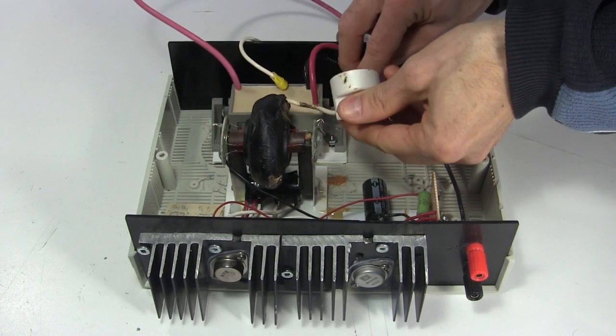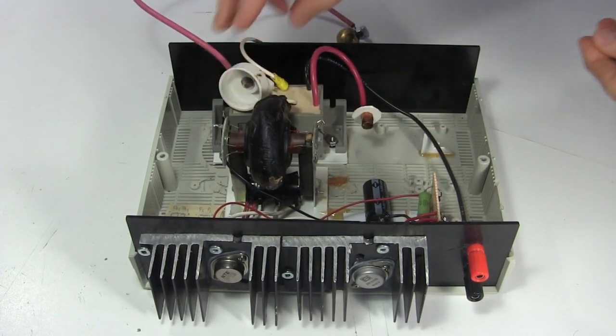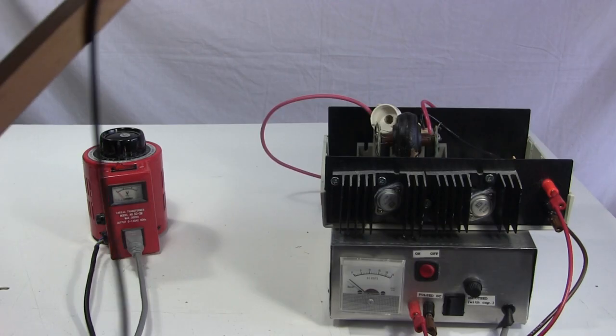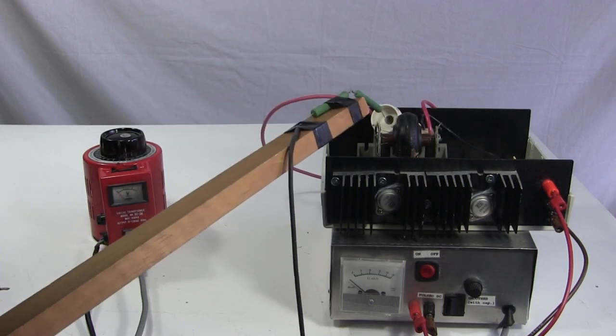To see if it's the problem, I simply remove it from the circuit. Without the tripler, the last component is now this flyback transformer. The output of the flyback transformer should be an arc. So I set it up to test it.